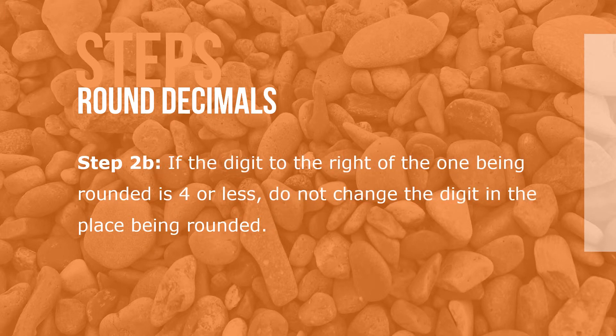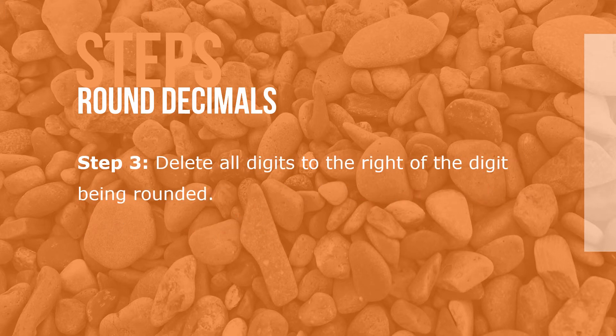Step 2b: if the digit to the right of the one being rounded is 4 or less, do not change the digit in the place being rounded. Step 3: delete all digits to the right of the digit being rounded.